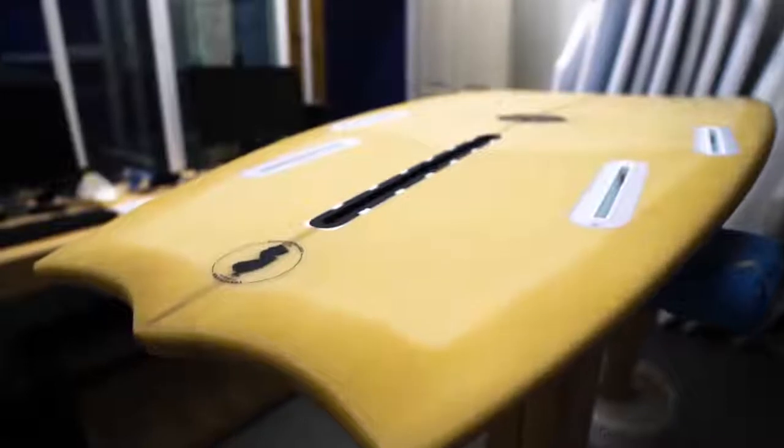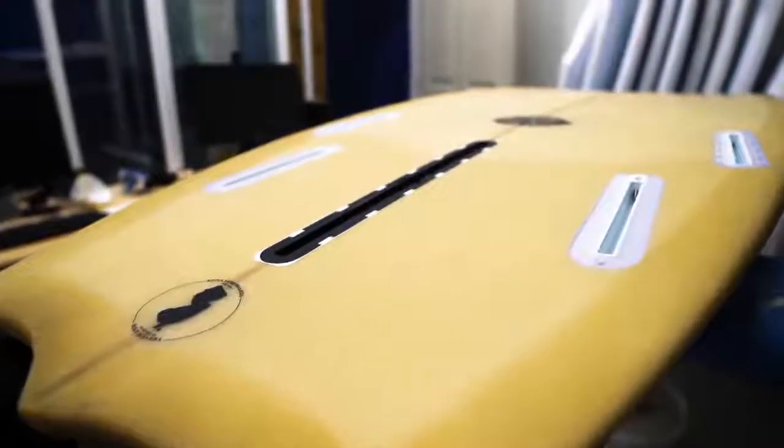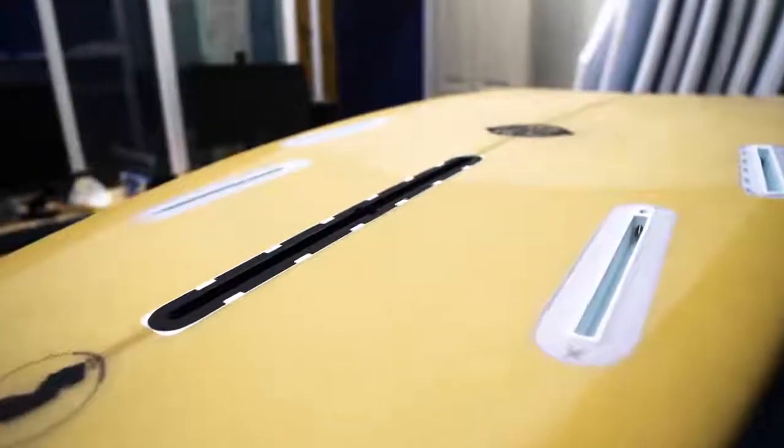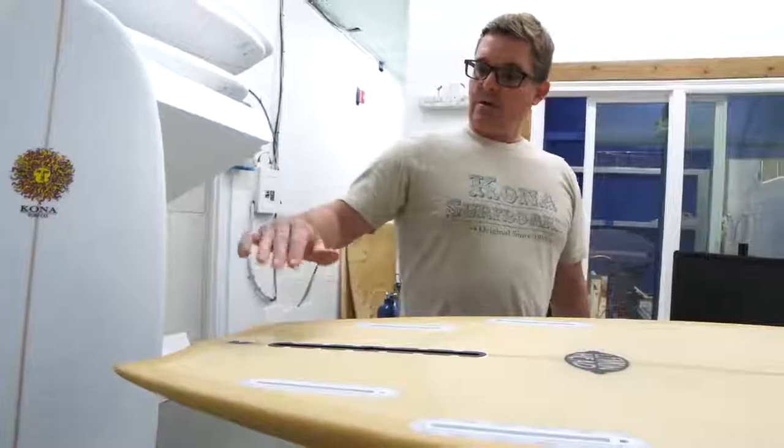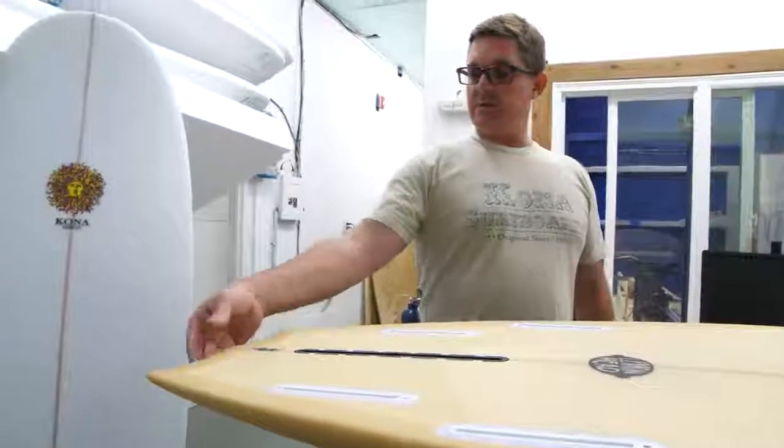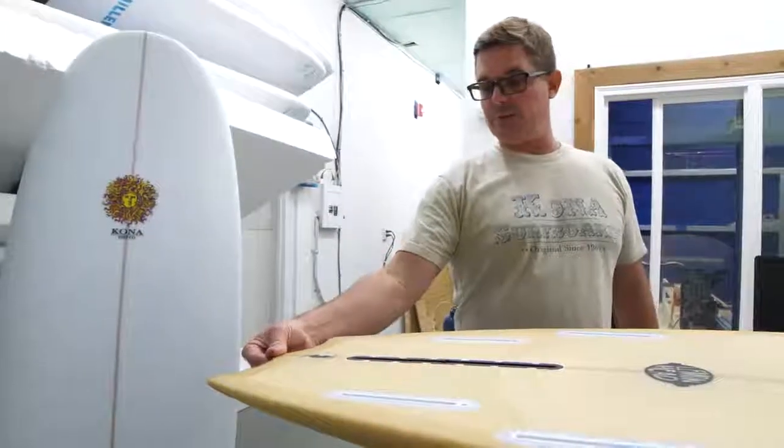And we decided to put this bat tail on it, which really gives you a transition point. It gives you release from your front and backside turns, and your pivot point is really the center.